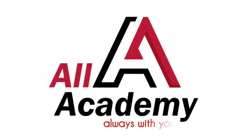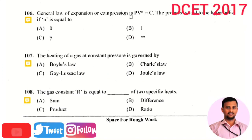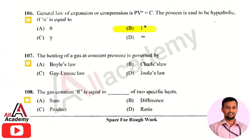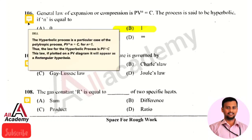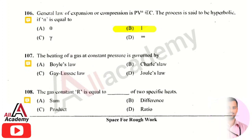The general law of expansion or compression is PV raised to n equals constant. The process is said to be hyperbolic if n is equal to one. The hyperbolic process is a particular case of a polytropic process in which n equals one, so the law of hyperbolic process is PV equals constant. If plotted on a PV diagram, it appears as a rectangular hyperbola.